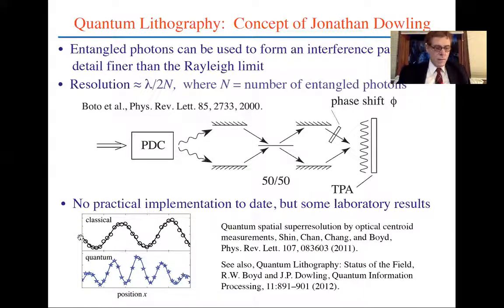In one demonstration done in my lab, here is the classical interference pattern using laser light and not using down conversion. But when we look at the interference pattern in the quantum case using the two indistinguishable photons, we see that the period becomes half as large, the spatial frequency becomes twice as large, potentially giving you an increase in spatial resolution in the case of lithography, allowing you to write smaller features.